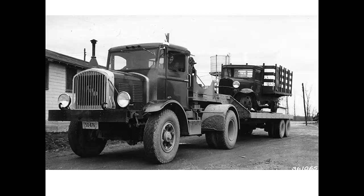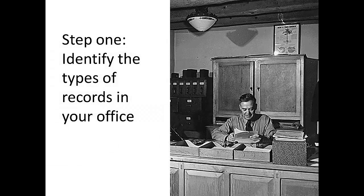Here's how to get started. First, you need to identify the series — those are the different types of records your office creates and maintains. You'll note what they are and where they're stored. You'll want to check out any central filing areas for paper records, and your shared drives and online information systems for electronic files. Be sure to talk to others in your office too. You want to identify all the different types of records and their storage locations.